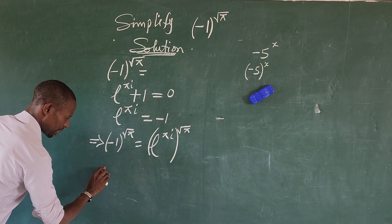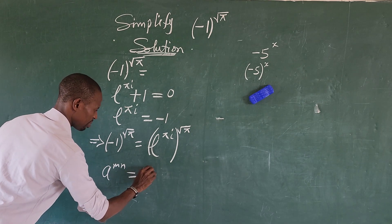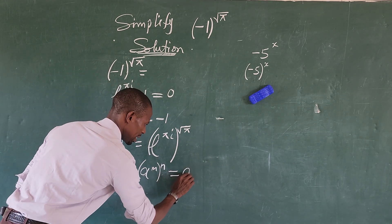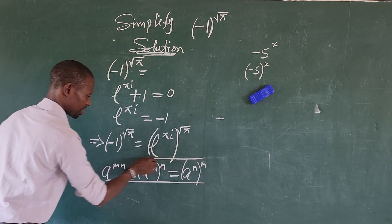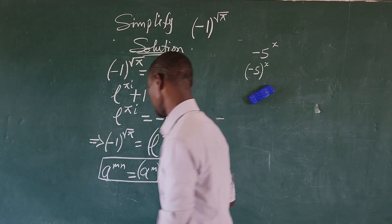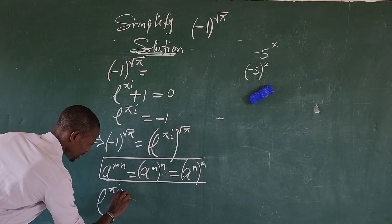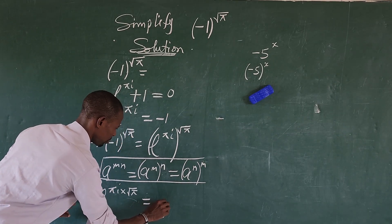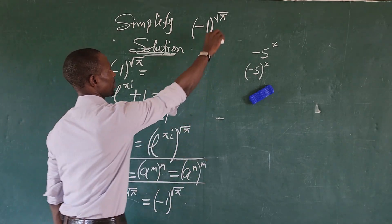We can open this up using the law of exponents, which states that (a^m)^n equals a to the power of m times n. Since both are exponents, we multiply them together. So we now have e to the power of pi·i times square root of pi, which equals (-1) to the power of square root of pi.